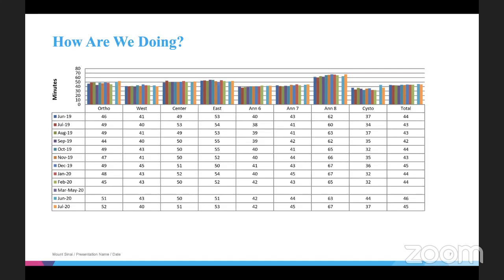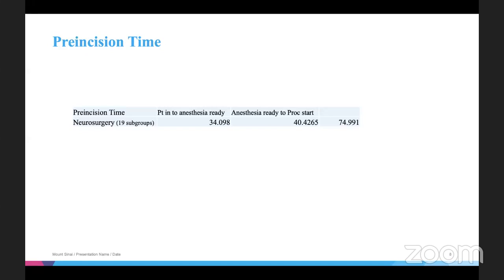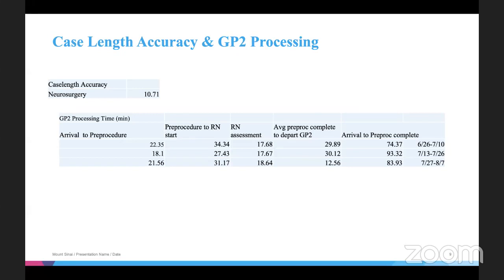We're also tracking pre-incision time — we're hovering around 75 minutes, including anesthesia getting ready and prepping before incision. For case length accuracy we're at 11% right now. Epic has a feature that shows the last five recent cases and their case length. If you use that as guidance, it should help. Adding the pre-incision time average to that might increase your accuracy. I can also provide that broken down by surgeon so you know your individual pre-incision time average.